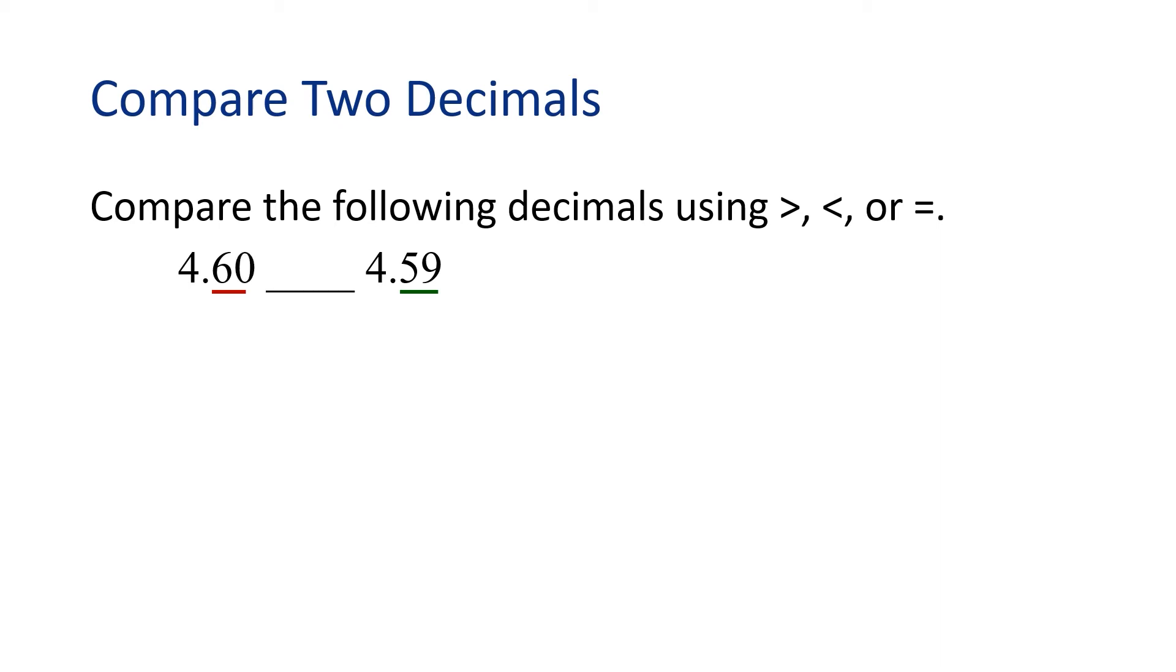We can write a zero at the end of the first number to make it have two decimal places. Now we can say that 4 and 6 tenths is equivalent to 4 and 60 hundredths. Let's compare these decimal parts.